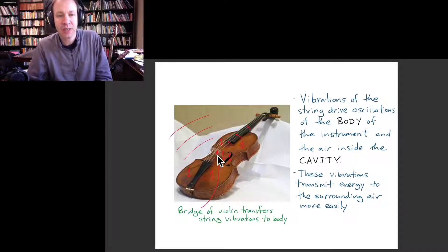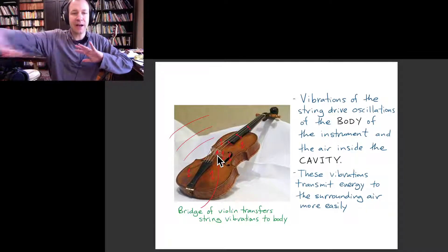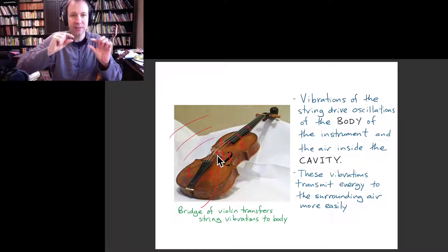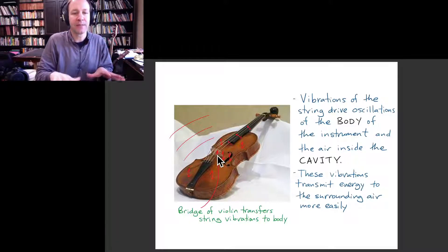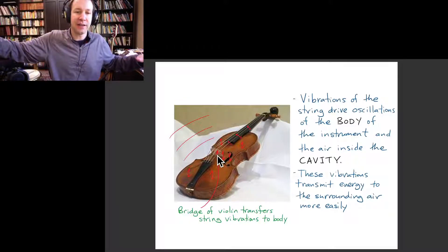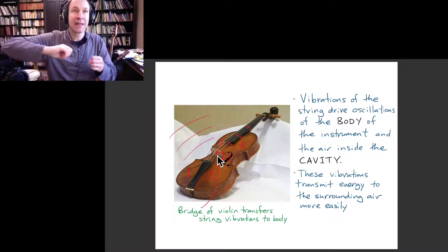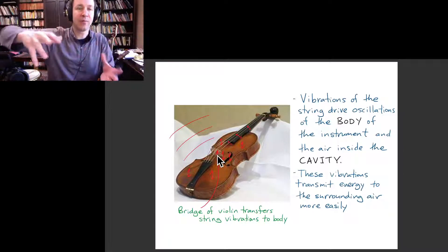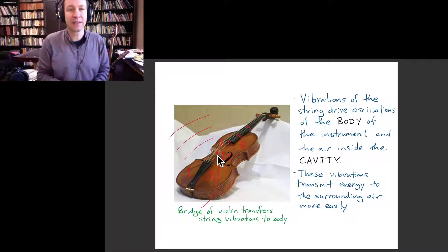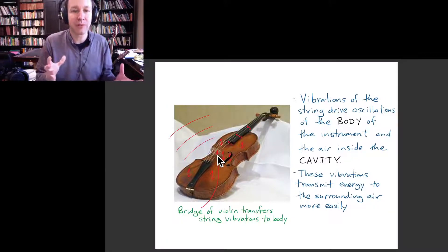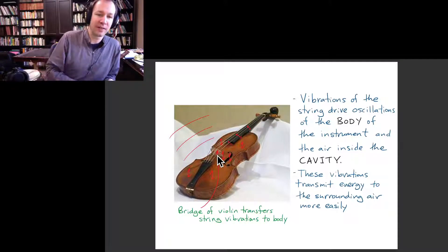And so that string causes the bridge to vibrate. And the bridge causes the top plate of the violin, which is like a thin piece of wood to vibrate. And that has a much larger area. And so when that top plate starts vibrating, then you have a transfer of your vibrational energy into sound energy that's much more efficient. So it's producing a lot more sound energy than just the vibration of the string.